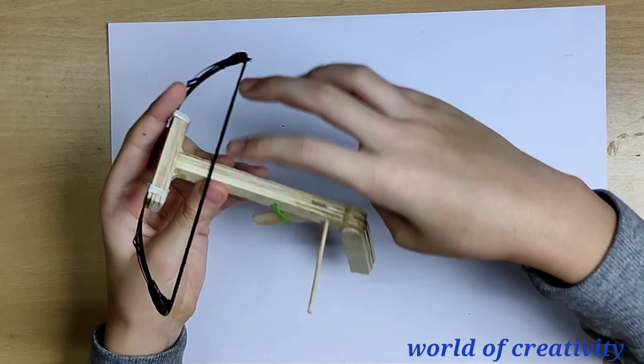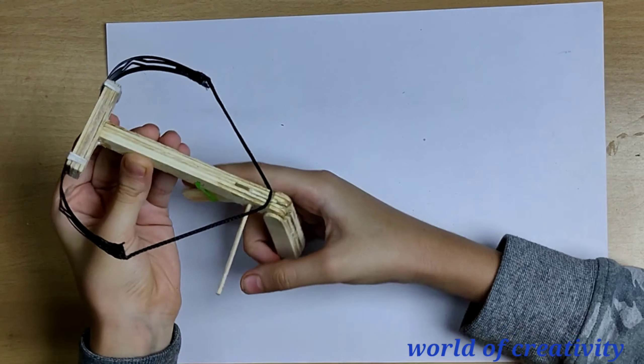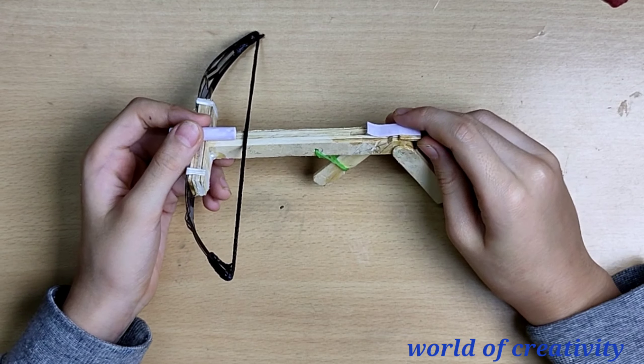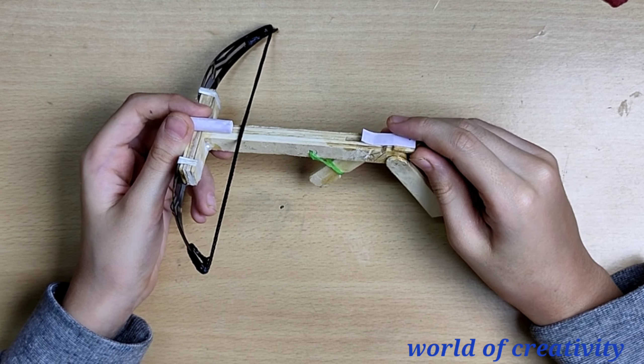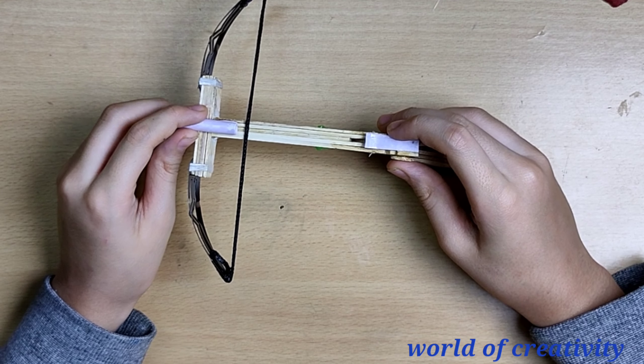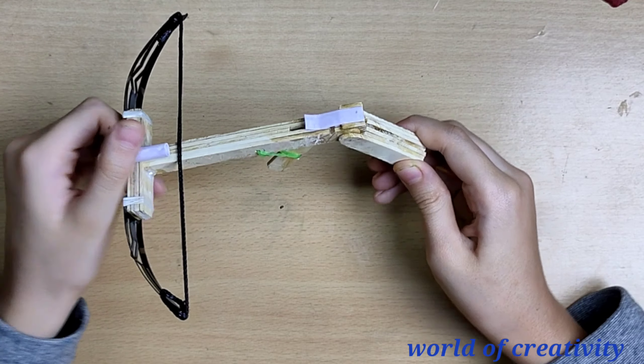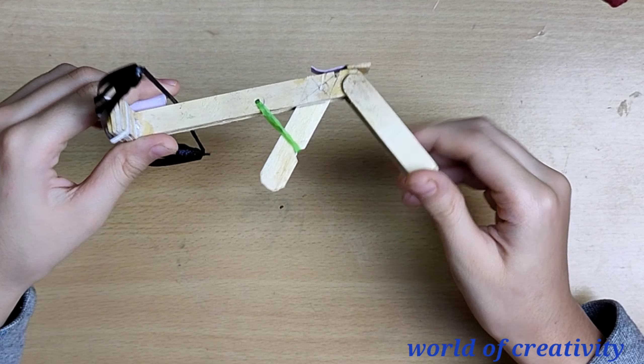Now we are going to cut a slit to hook up the thread. In the front part, we will take a rolled paper and stick it in the center. And also in the rear part, we are going to stick a paper and apply super glue on it which will hold our arrows.